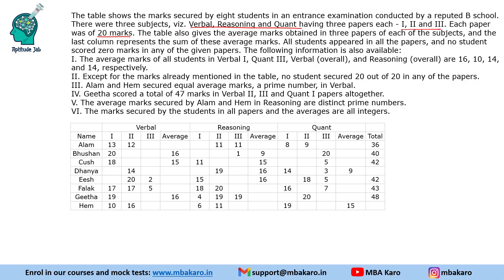The table also gives the average marks obtained in 3 papers of each of the subjects. The last column represents the sum of these average marks. So for every subject you attempt 3 papers, you get an average, and all these 3 averages are added to get the total score of the student. All students appeared in all the papers and no student scored 0 marks in any of the given papers.